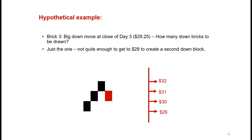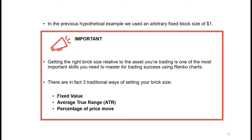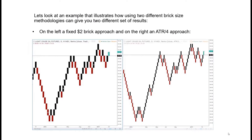A big down move on day three to $29.25 — it was just enough to create one red down brick to $29. On the fourth of June, one new down block was created, then price bounced sideways not enough to create further blocks. Finally on the 11th, price collapsed to $25 creating a string of new down blocks. In this example we used an arbitrary fixed block size of one dollar. It's really important to get the right brick size relative to the asset you're trading — it's one of the most important skills to master. There are three traditional ways of setting your block size: the fixed value, the average true range (ATR), and a percentage of price move.